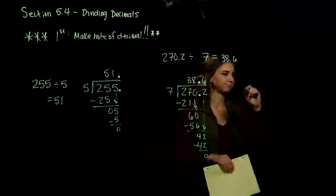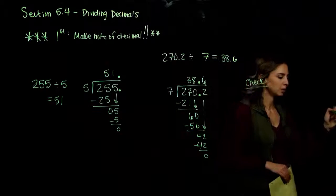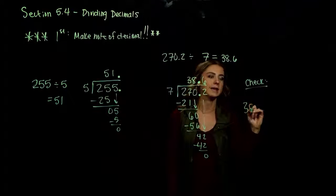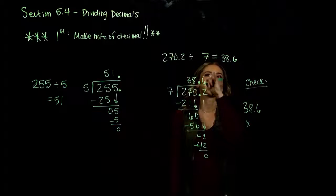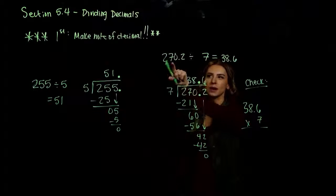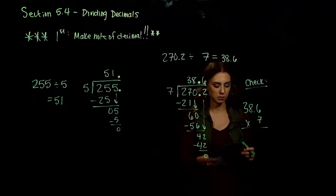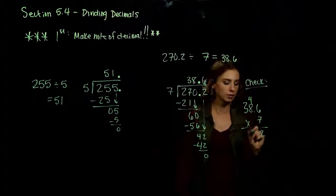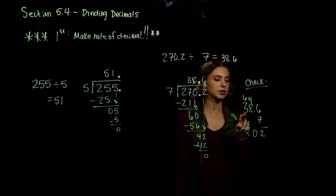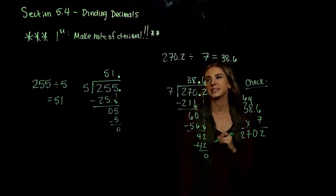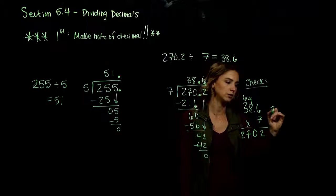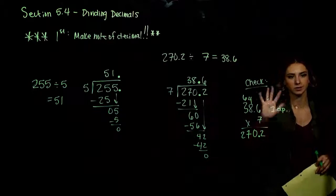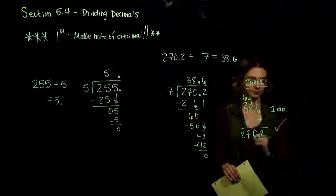How could we check this? With division, we can always check with multiplication. So we're going to multiply our answer, 38.6, by our divisor, 7, and make sure we get out 270.2. 6 times 7 is 42. 7 times 8 is 56, plus another 4 gives us 60. 7 times 3 is 21, plus another 6 gives us 27. We have to move in one decimal point from the top value, zero from the bottom, so we get 270.2. It checks out.